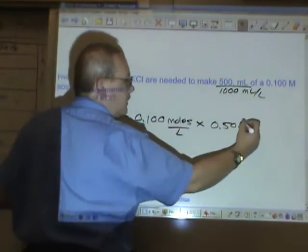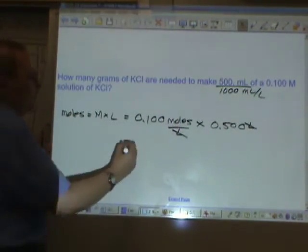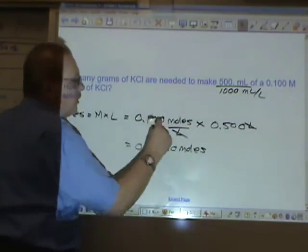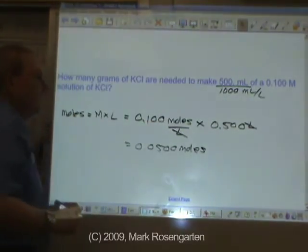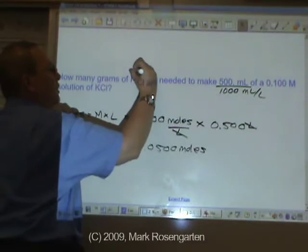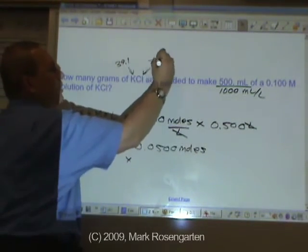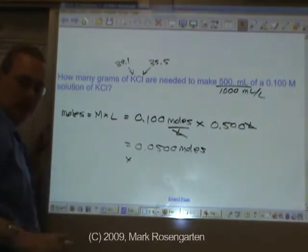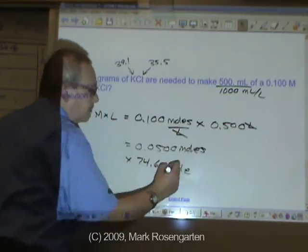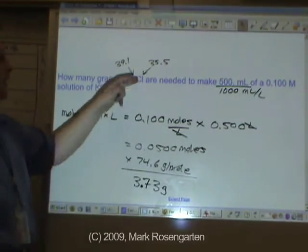Liters go bye-bye. It leaves us with moles, which is what we're trying to find out. 0.0500 moles. Three sig figs, three sig figs, three sig figs. To find grams, we need to multiply it by the formula mass of KCl. According to the periodic table, K is 39.1, Cl is 35.5, which adds up to 74.6 grams per mole. When you multiply that out, 3.73 grams of KCl are needed.